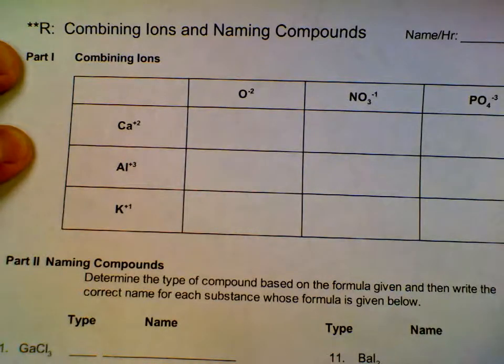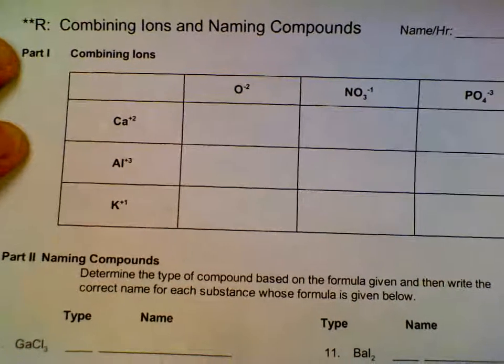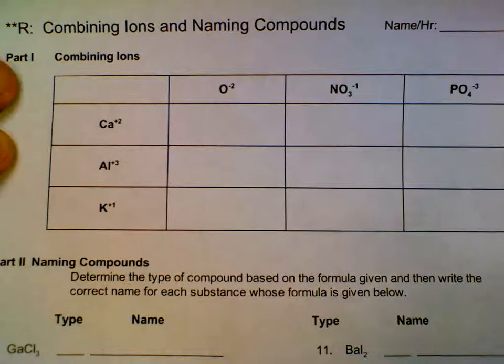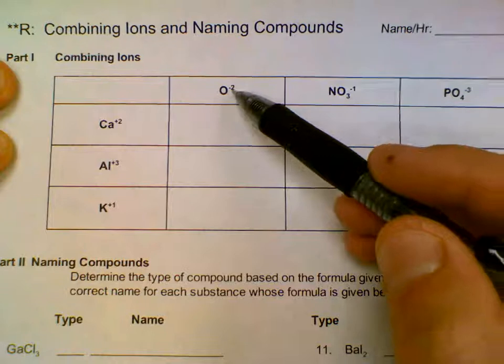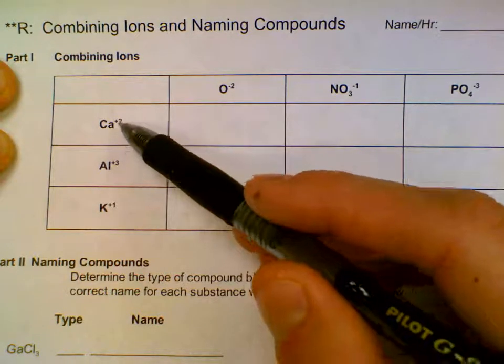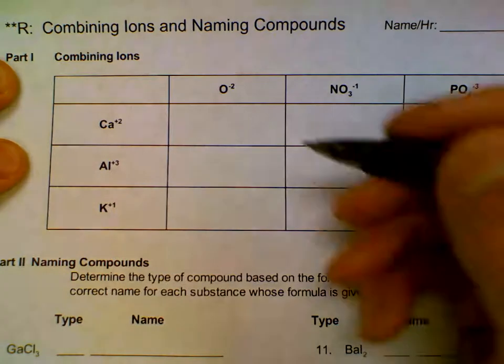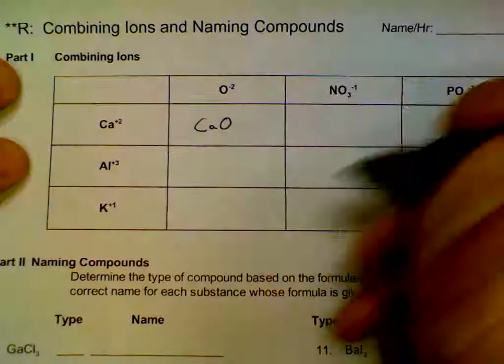Recall that the method for writing the correct formula is to criss-cross the ion charges, and if the subscripts can be reduced, go ahead and reduce them. So Ca plus 2, O minus 2, the 2 on the O would go on the bottom of the Ca. The 2 on the Ca would go on the bottom of O. Both subscripts are 2, so they can reduce down to CaO, plus 2 minus 2 cancel.